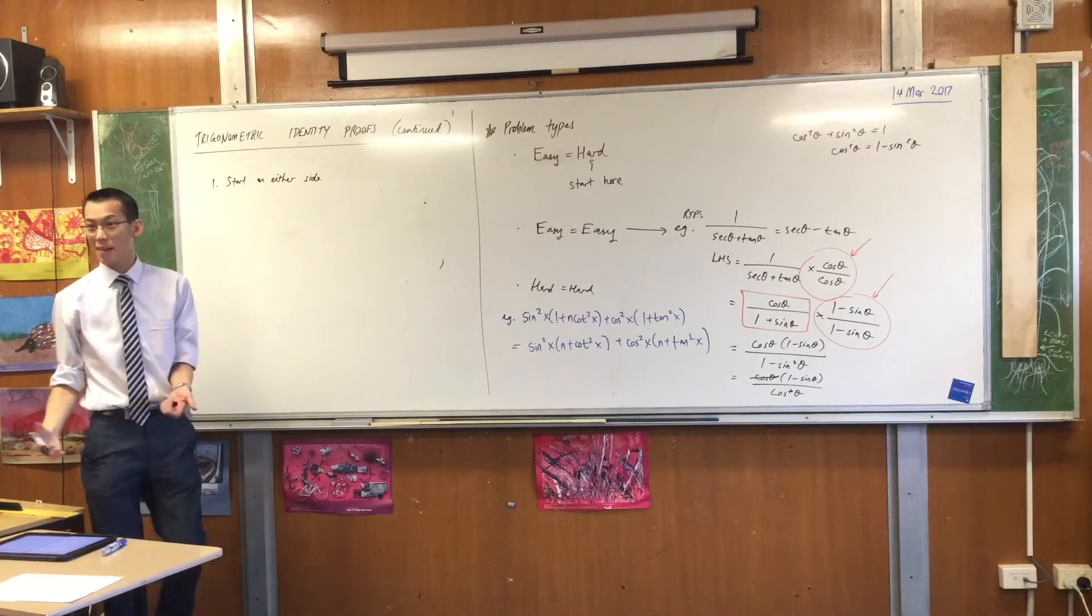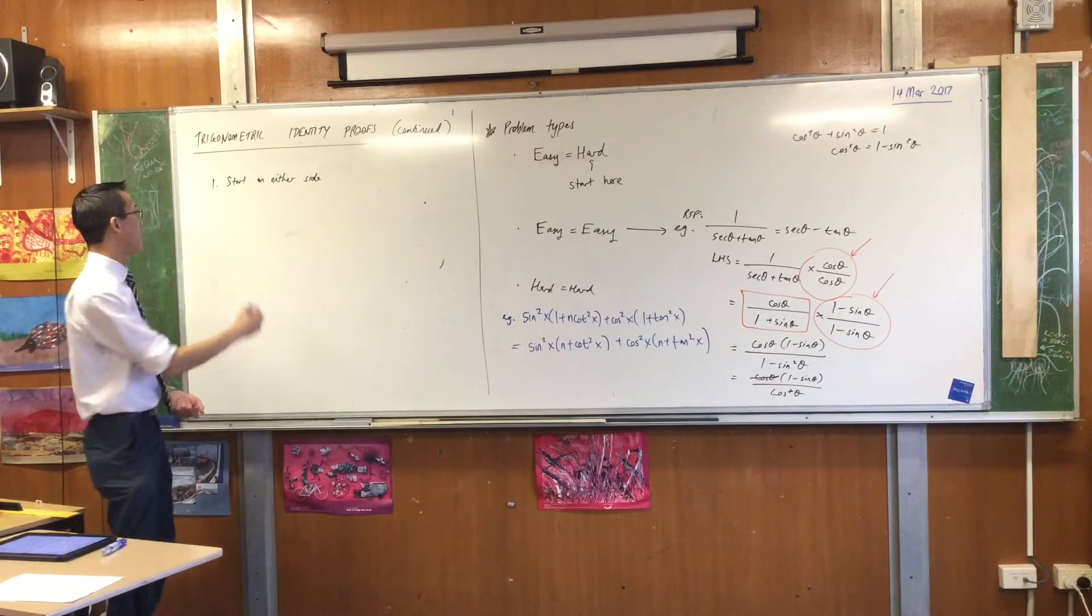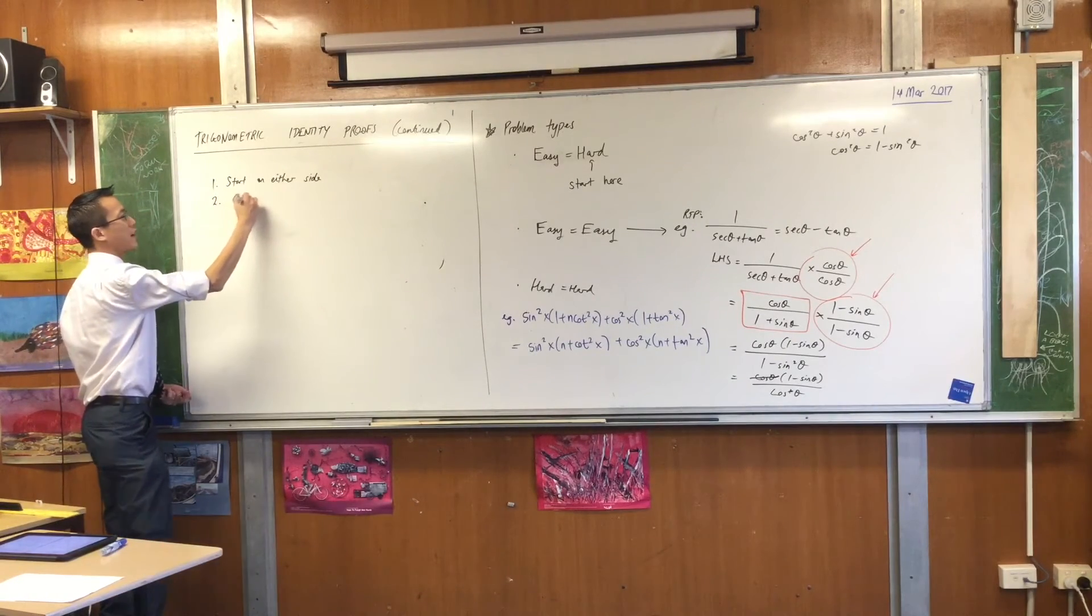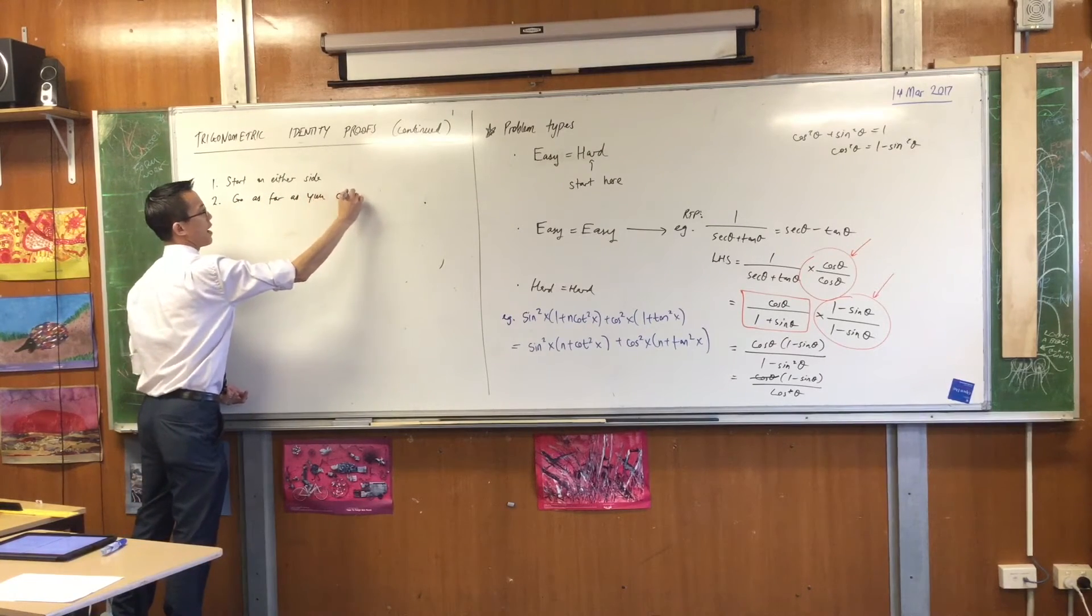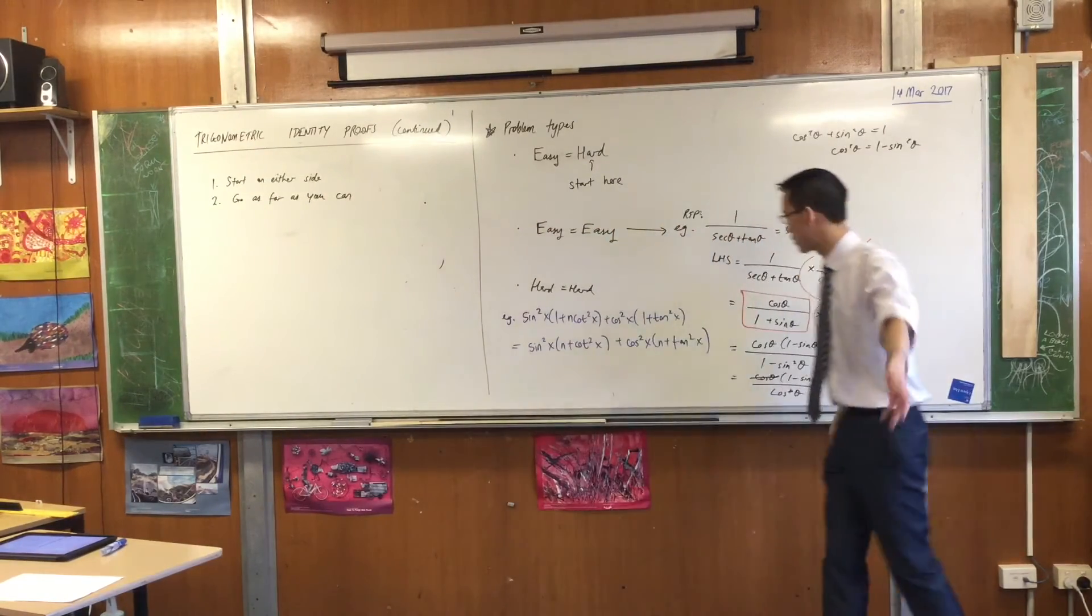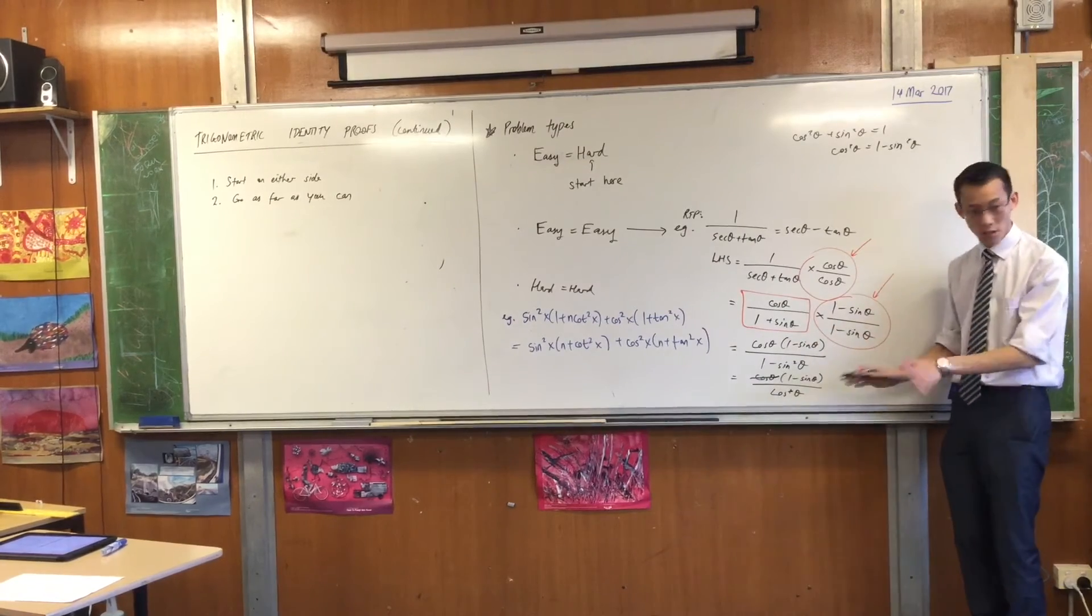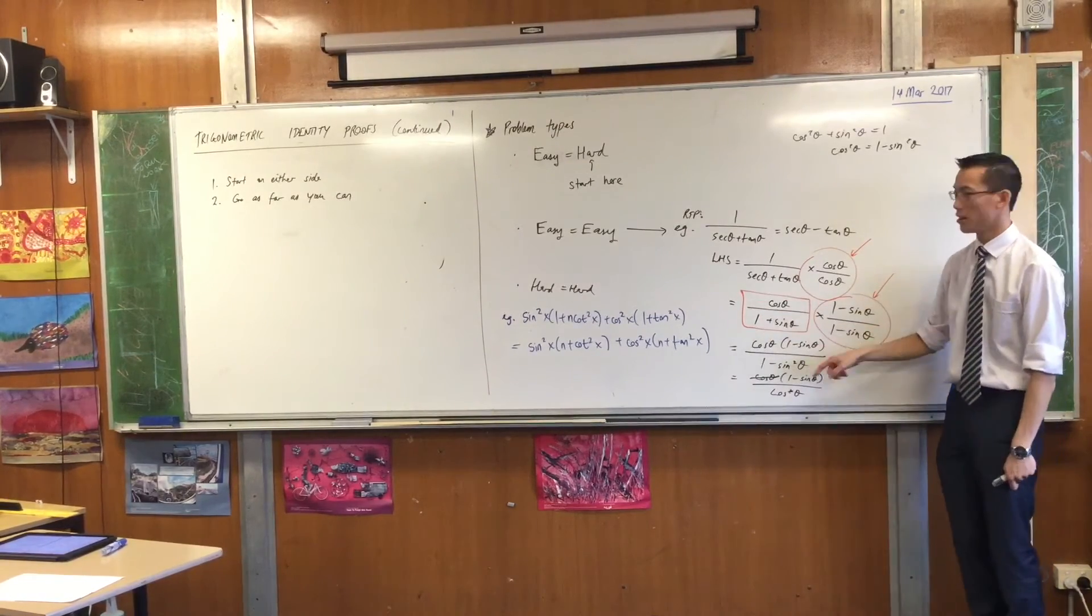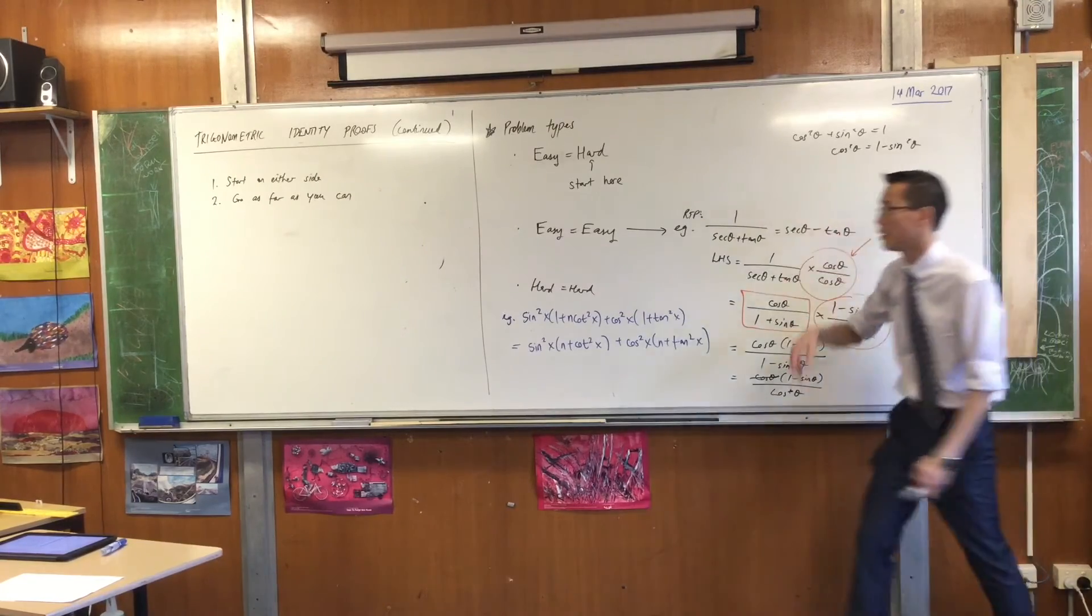If they're both hard, it doesn't matter. You can do something, you can recognize some identities, you can expand something. Start on either side, go as far as you can. Simplify out as many things as possible. If you can't see any obvious path like we did before, like Jake mentioned, oh, I've got to get rid of the denominator. If you can't see that, don't worry, just get to this point, and then if you don't see anything else, just stop. Go as far as you can.